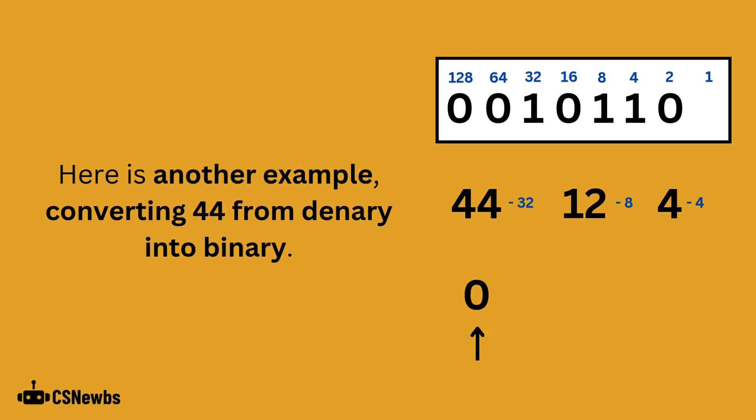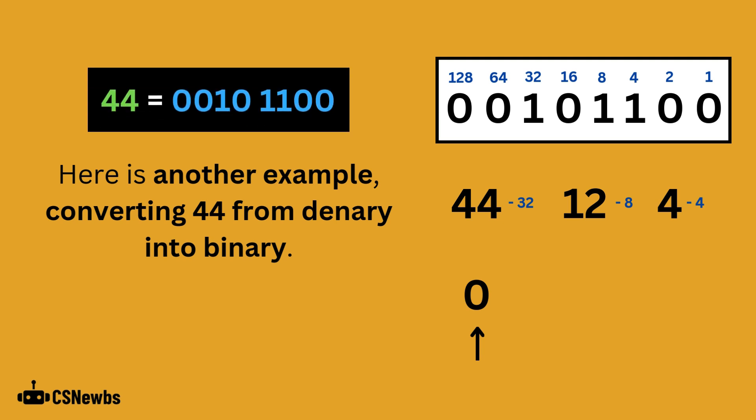Now that our denary number is 0, we can add 0 to the rest of the place values. The final conversion is complete, and 44 is equal to 00101100.